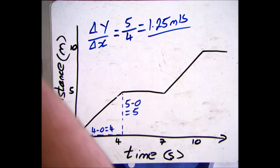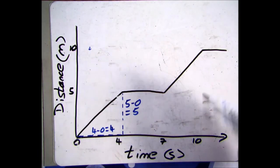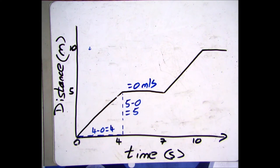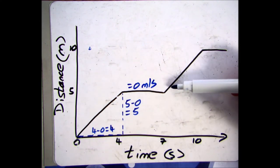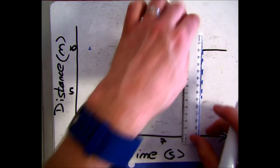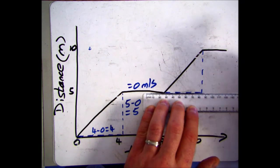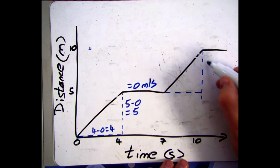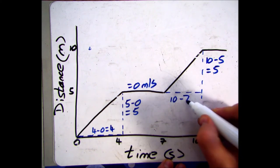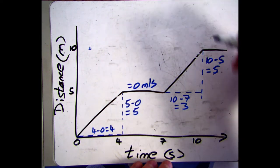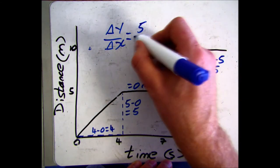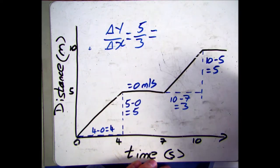The second section is a flat line, so we know without calculation that the object is stationary — speed is zero metres per second. For the third section, we work out the gradient triangle for just that section. On the y-axis it ends at 10 and started at 5, so it changes by 5. On the x-axis it ends at 10 and starts at 7, so the change is 3. Putting those into the equation — change in y divided by change in x — gives us 5 divided by 3, which is 1.67 metres per second.